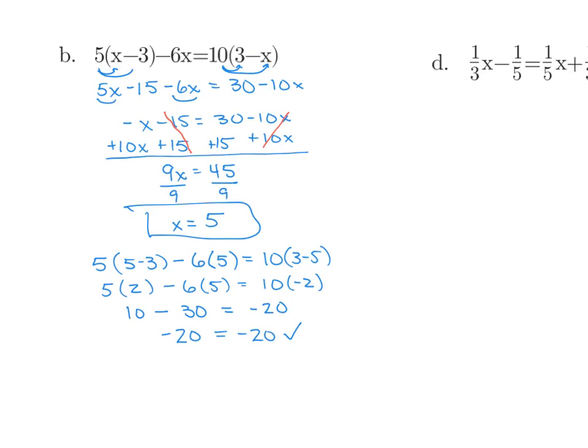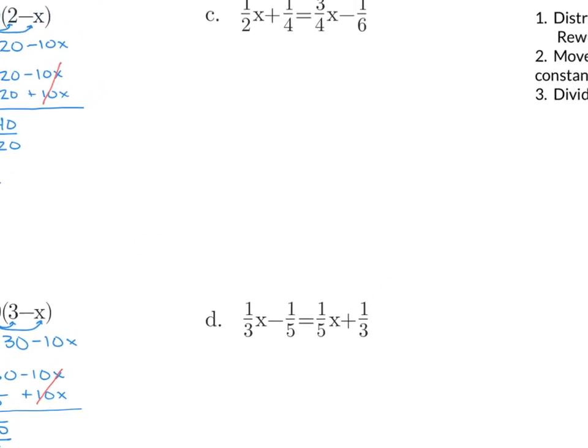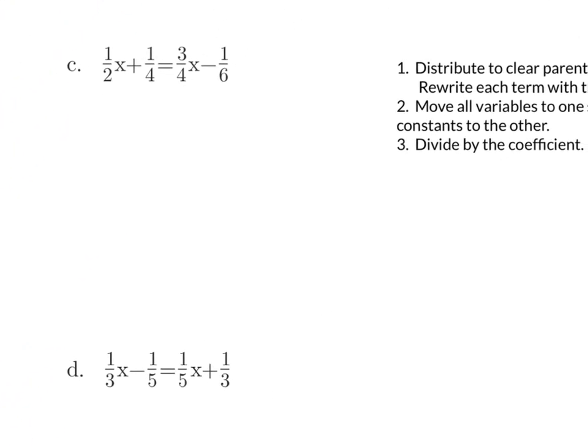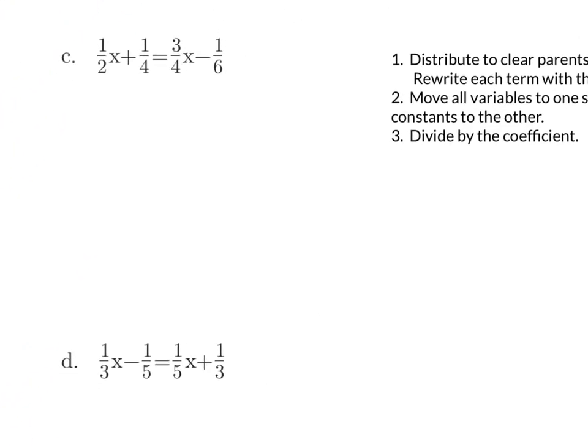Let's look at some ones that involve fractions. Remember our first step is to clear the fractions — we want to find the LCD. For C, we want a number that is divisible by 2, 4, and 6. Our LCD is going to be 12.